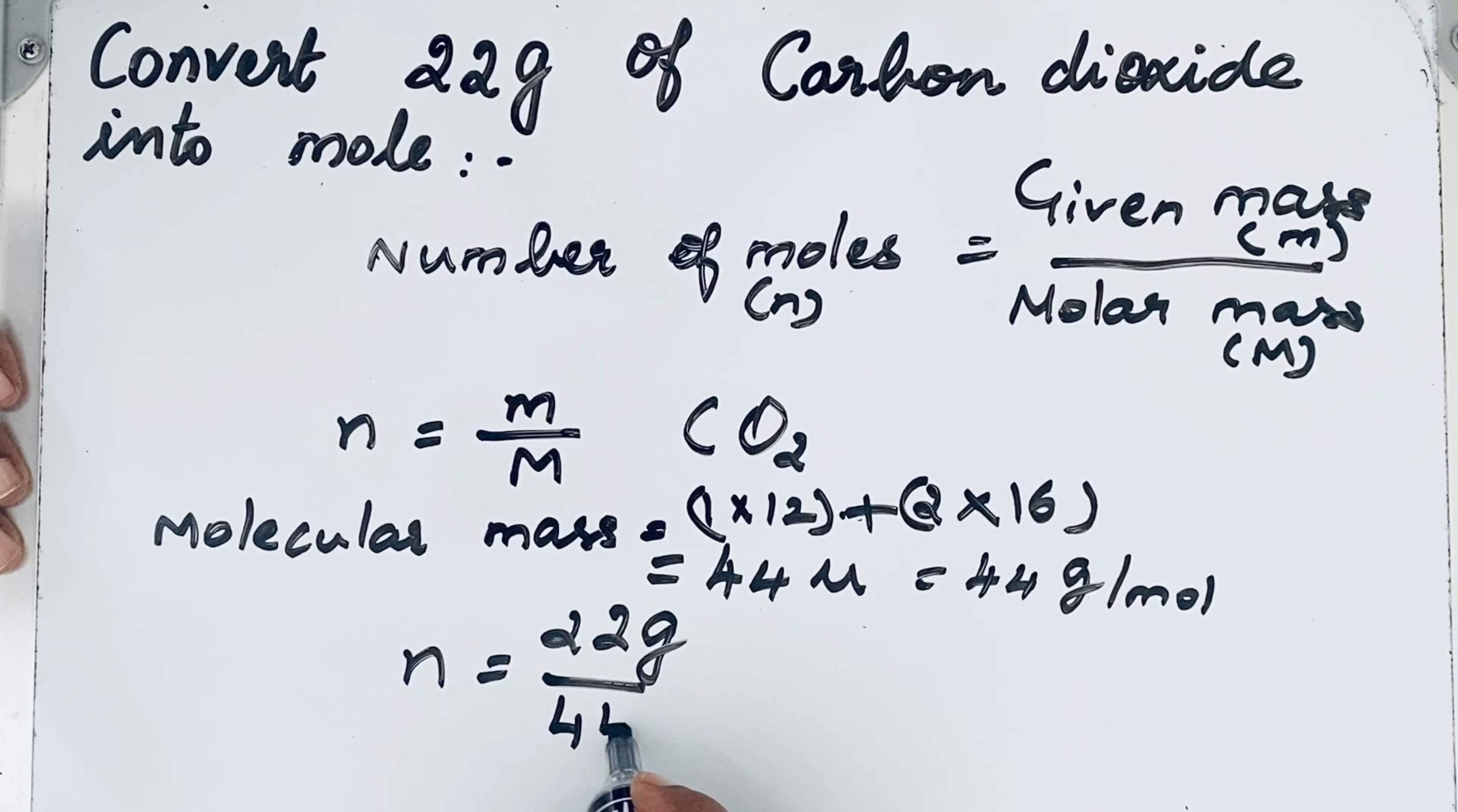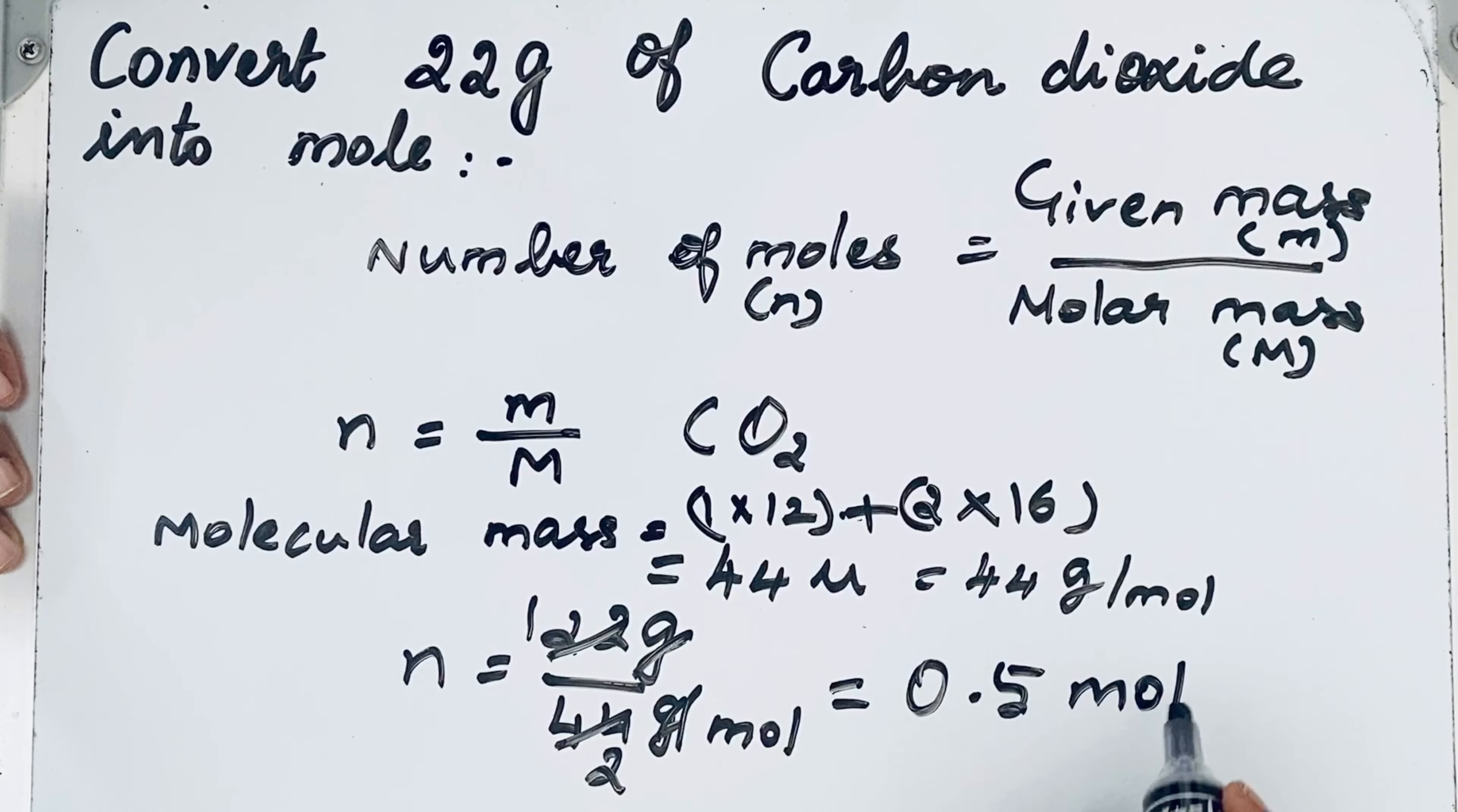So what will you get? 1 by 2, isn't it? So gram, gram will cancel out. So it will come like 1 by 2, that is equal to 0.5 mole.